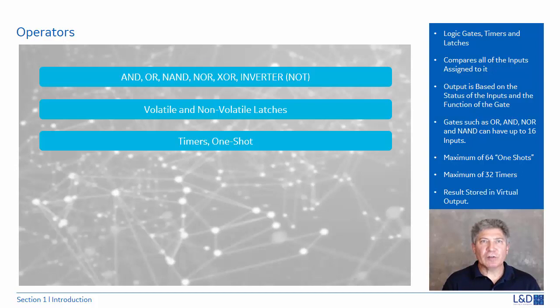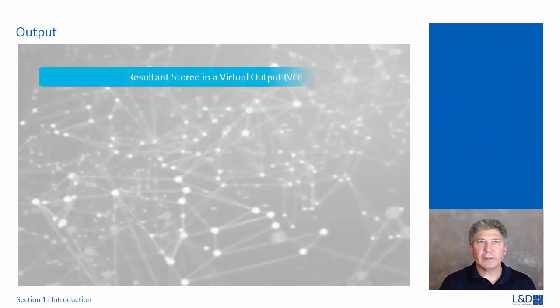The output or the resultant of the operator is stored in a virtual output. In FlexLogic, the results of the operator are stored in an output. That output is known as a virtual output. There are 96 virtual outputs in the UR.